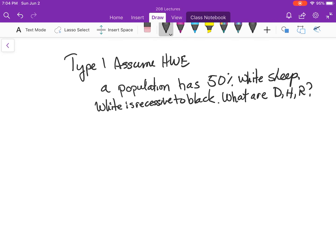Problems type 1. Assume Hardy-Weinberg equilibrium. So now we have a population that has 50% white sheep, and white is recessive to black. What are D, H, and R?